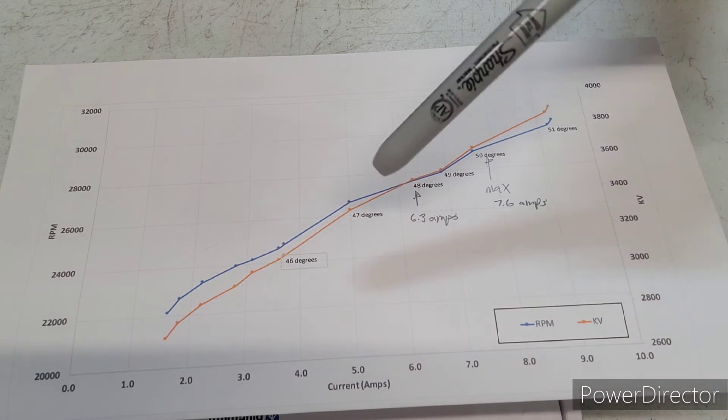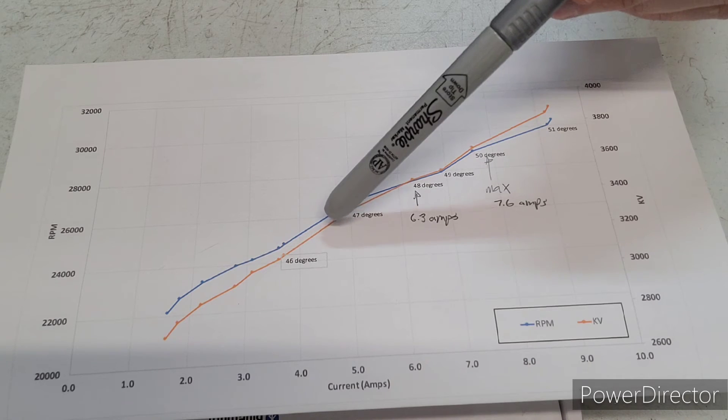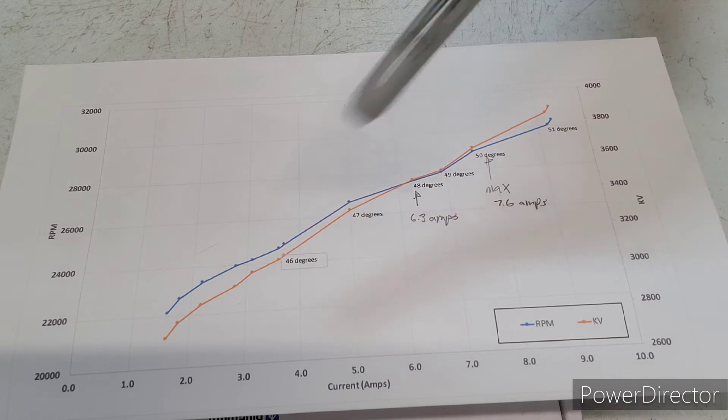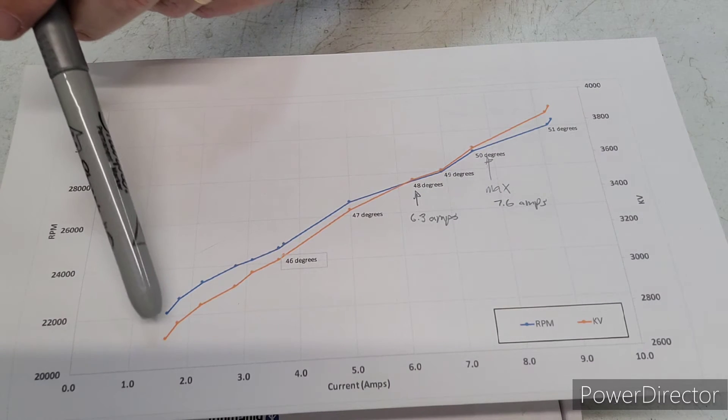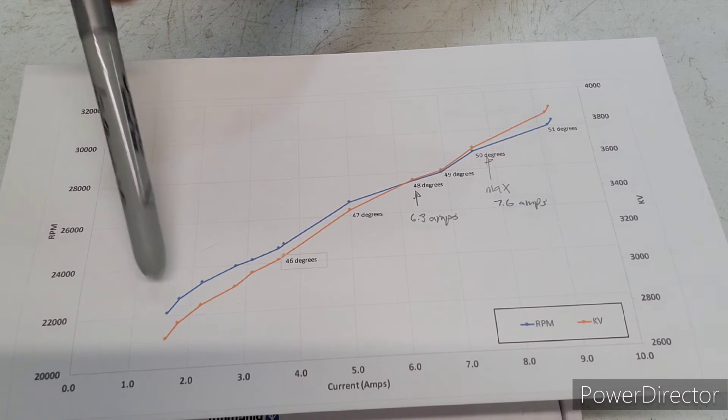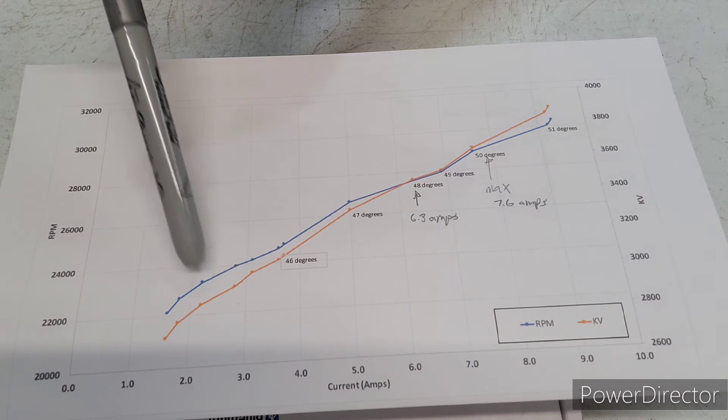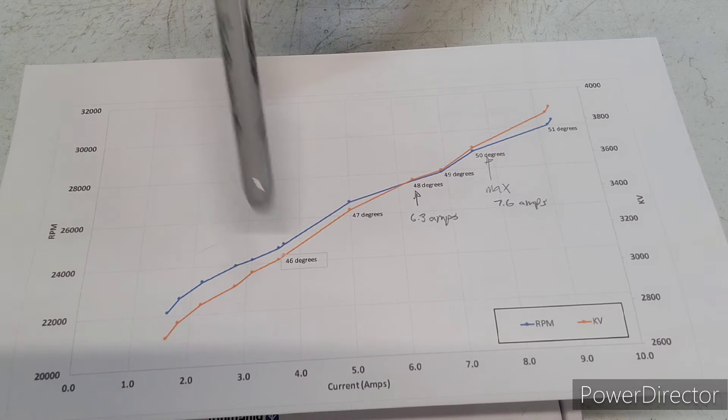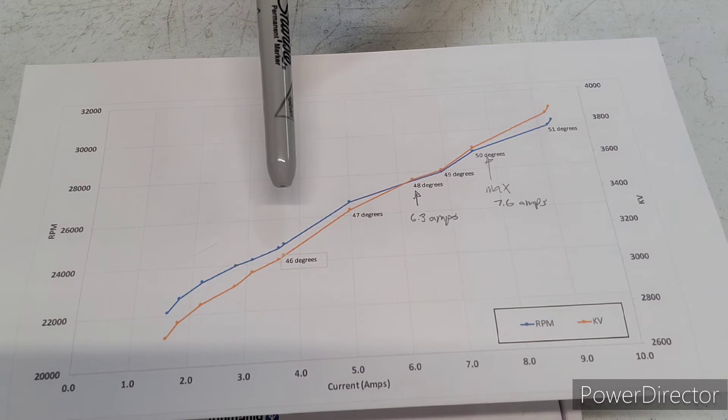And so then representative this orange or yellow line is KV here. And the blue line is RPM. And I started down here at 25 degrees and I incremented by five degrees until I got to 45 degrees. And then I went by one degree increments.